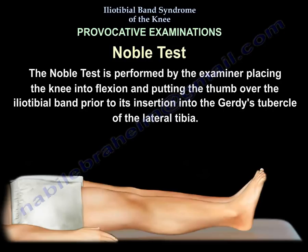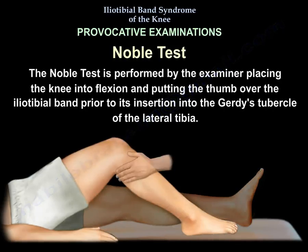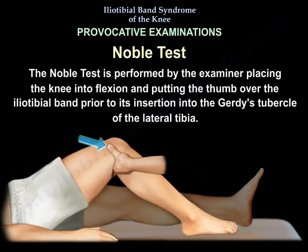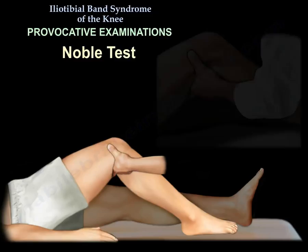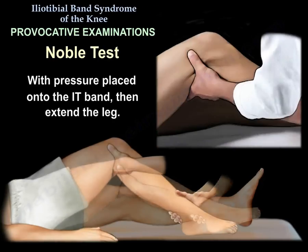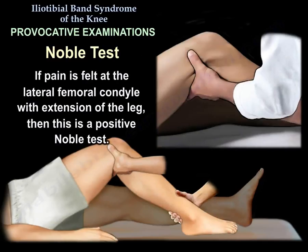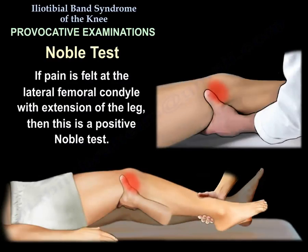The Noble test is performed by the examiner placing the knee into flexion and putting the thumb over the Ileotibial band prior to its insertion into Gerdy's tubercle of the lateral tibia. With pressure placed on the IT band, the examiner then extends the leg. If pain is felt at the lateral femoral condyle with extension of the leg, this is a positive Noble test.